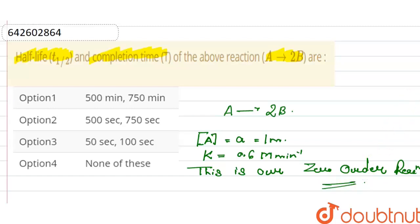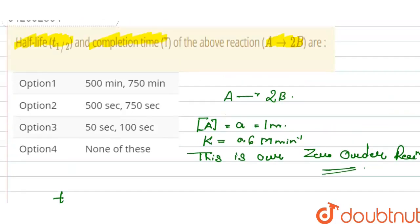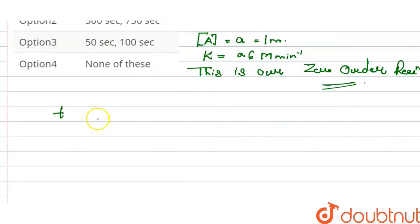Now we have to find the half-life. The half-life we find by the formula A upon 2k, where A is 1 per liter.